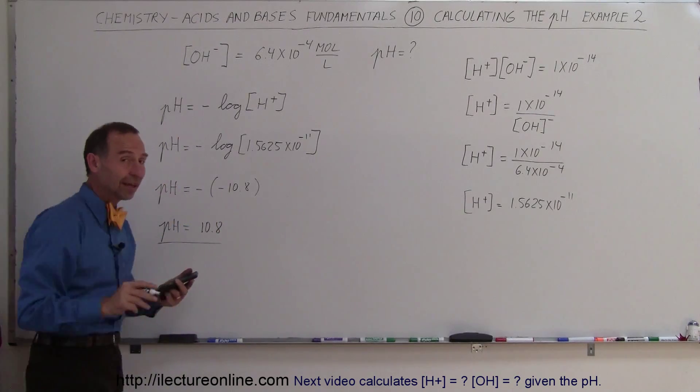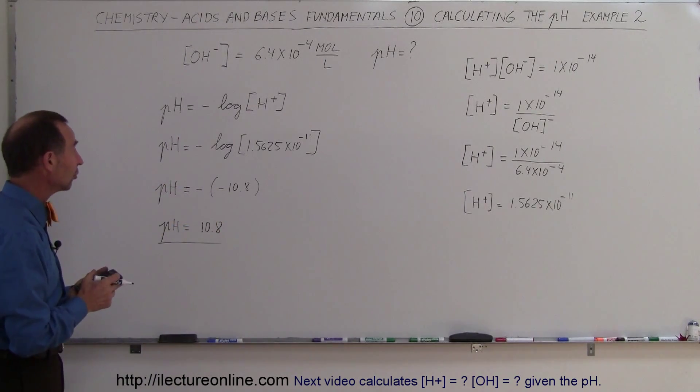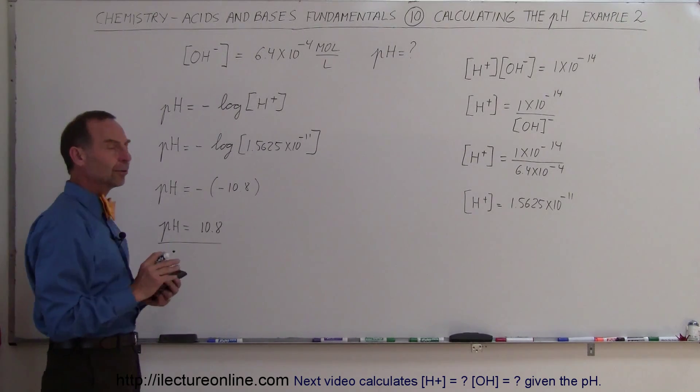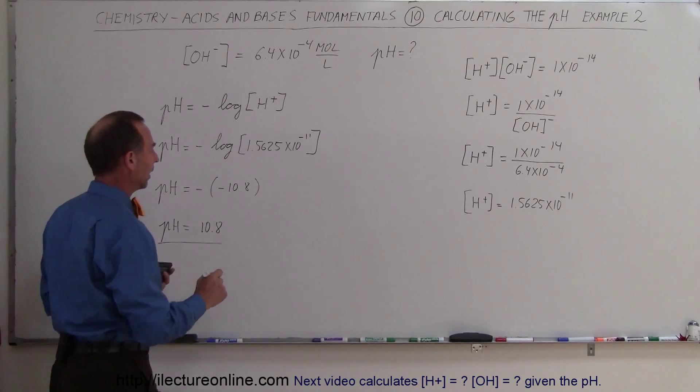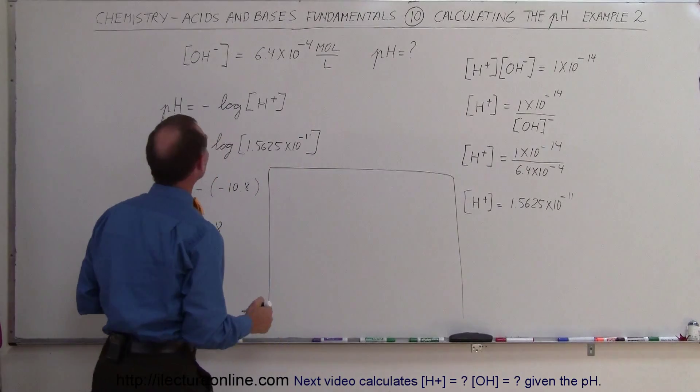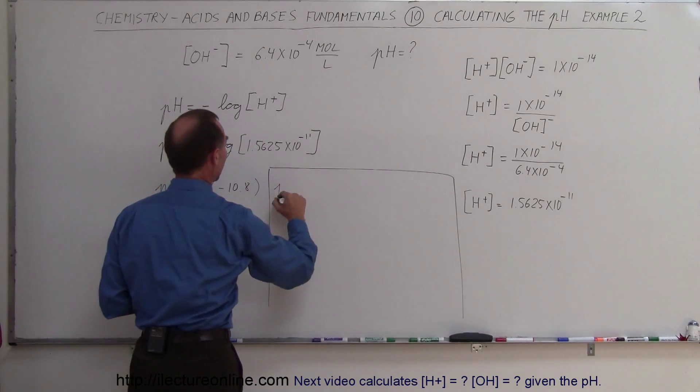Since it's greater than 7, that makes that a basic solution, so that concentration's basic. And let's see here, another way in which we could have done that, and you may like this way a little bit better, is instead we could have solved directly for the pOH.